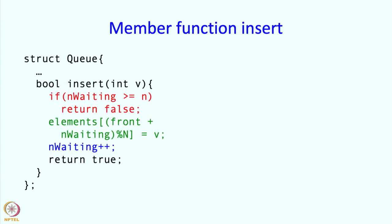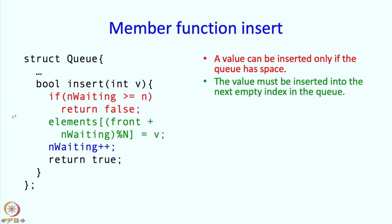The member function insert is not hard to write. We are inserting a driver V, and we're going to check if the queue has space. If so, we're going to insert it at the back of the queue. Then we increment n waiting and return true because this is successful. If there were too many people waiting, then the insertion is not successful, so return false.